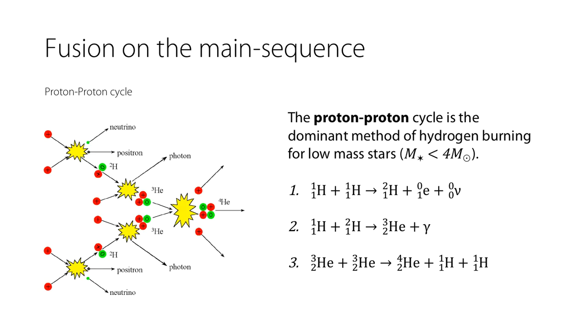And for most low mass stars that is dominated by the proton-proton cycle. Two protons form deuterium, give off a positron and neutrino. Deuterium and another proton merge to form helium-3 and give off a photon and that photon carries a lot of the energy away.